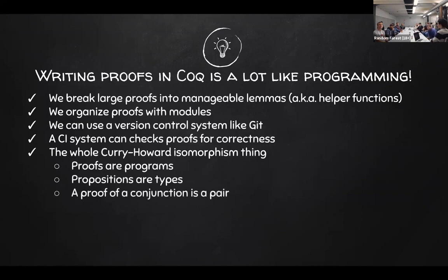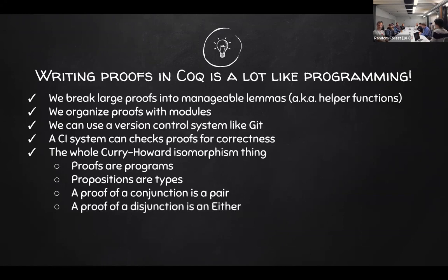To make it more concrete: if you want to prove A and B — that's a conjunction in logic — you have to provide a proof of A and a proof of B. And in programming, that's the same thing as making a pair. It works with disjunction too: if I want to prove A or B in logic, that's the same thing as constructing an Either in Haskell — there are two constructors, I can pick which one, I only need one.